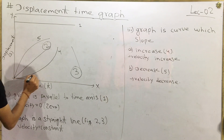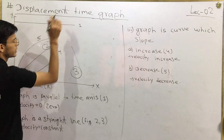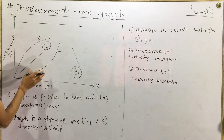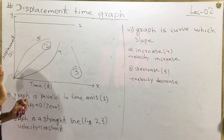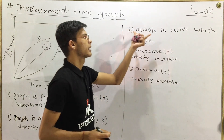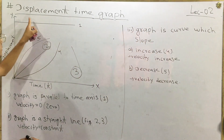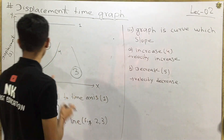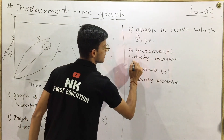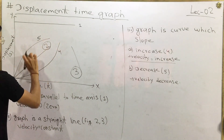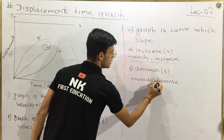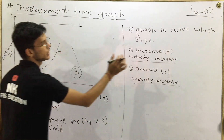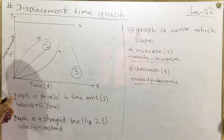The displacement time graph is a straight line for figures 2 and 3. When the graph is a curve with increasing slope, the velocity is increasing. When the slope is decreasing, the velocity is decreasing. You can see in figures 4 and 5 it is an increasing graph.